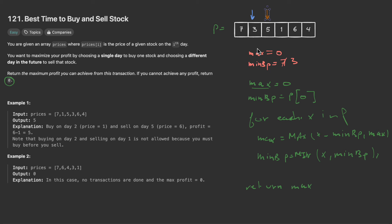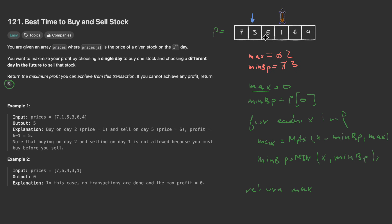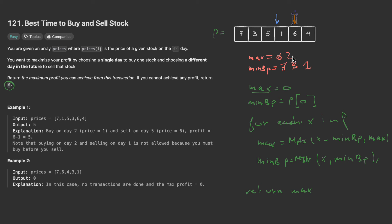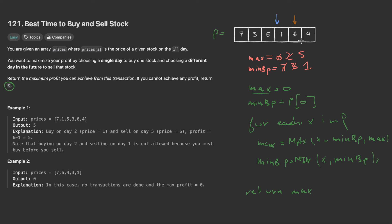Moving to the next element: five minus three = two, so we update max to two. Min buying price stays at three since five is greater. Next, one minus three = negative two — we don't update max, but we update min buying price to one. Then six minus one = five, so max is updated to five. Next, four minus one = three, which is not greater than five. We've reached the end of the array — the maximum profit is five.